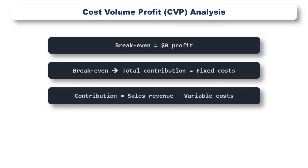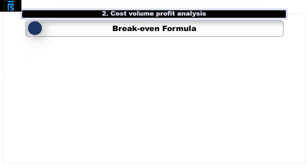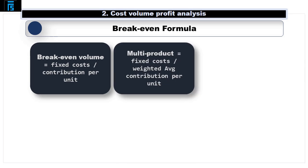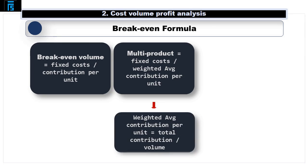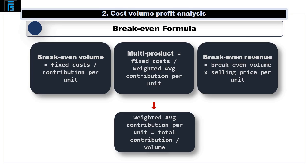Contribution is calculated as sales revenue minus variable costs. So if we know the contribution we can make for each unit we sell — the selling price per unit minus the variable costs per unit — we can work out how many units we need to sell to cover the fixed costs. The breakeven formula is therefore fixed costs divided by contribution per unit. If there are multiple products, we use a weighted average contribution per unit, calculated by taking the total contribution and dividing by the total volume sold. We can then multiply the breakeven volume by the selling price per unit to find the breakeven revenue, or use the contribution to sales ratio as we will see later.